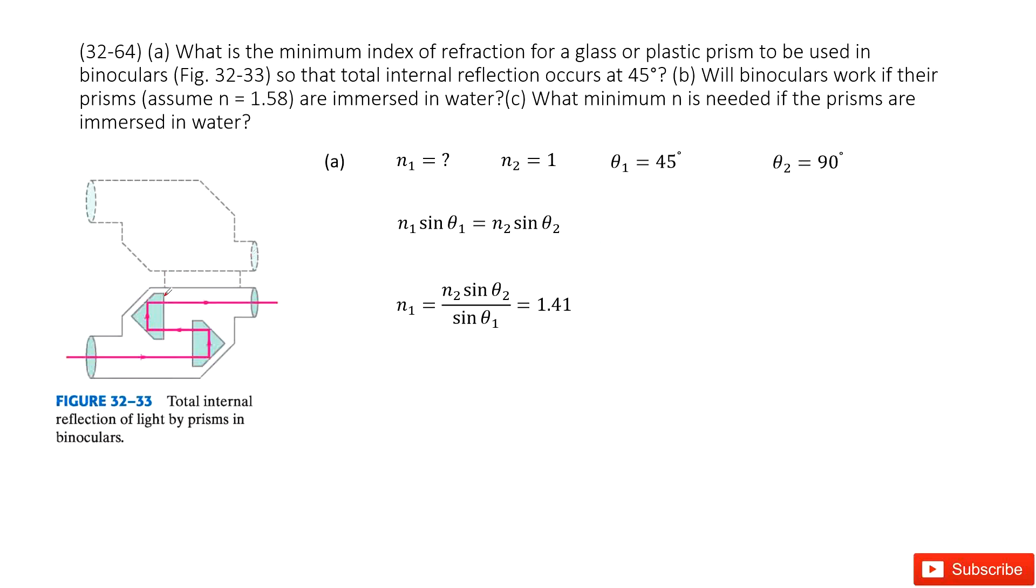So we can see the device. For this device, the index of the object is n1 - we don't know it, we want to find it. And n2 is 1 because it is in the air.